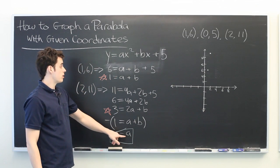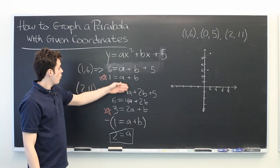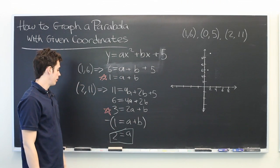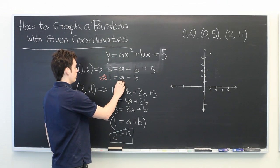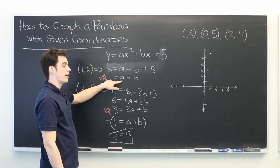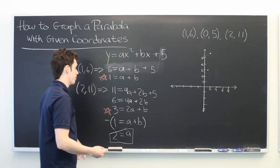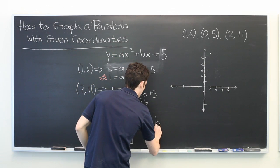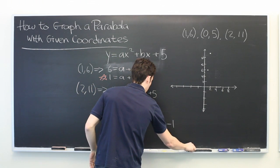Now we can take this piece of information and simply plug it into any one of these equations to get b. So if we plug it in here, see 1 is equal to 2 plus b. Therefore, b must be negative 1. Box that as well.